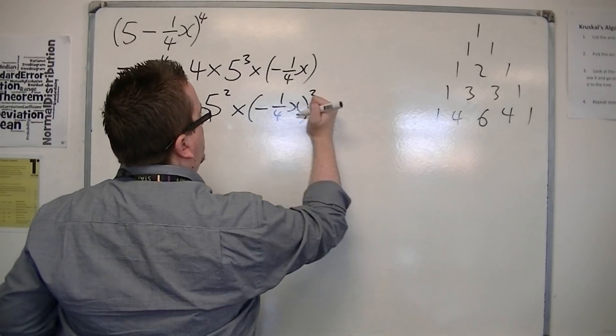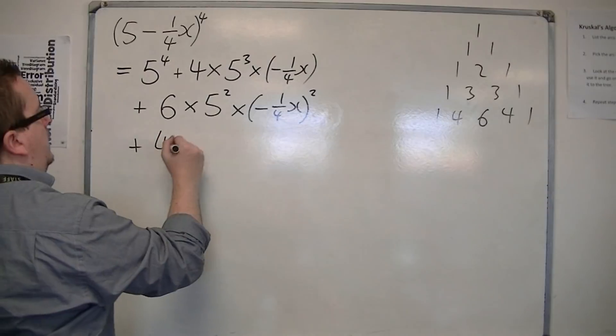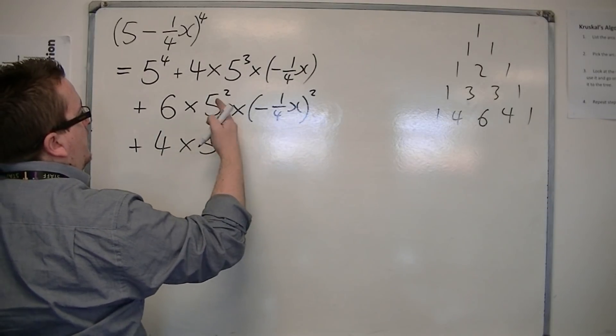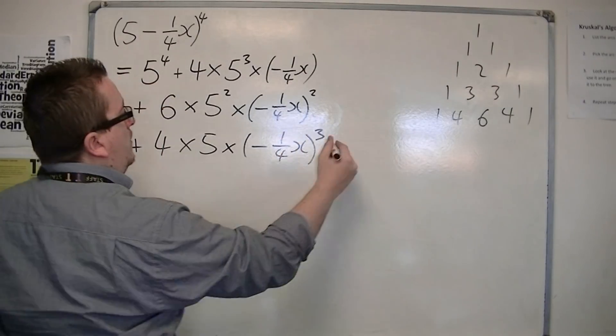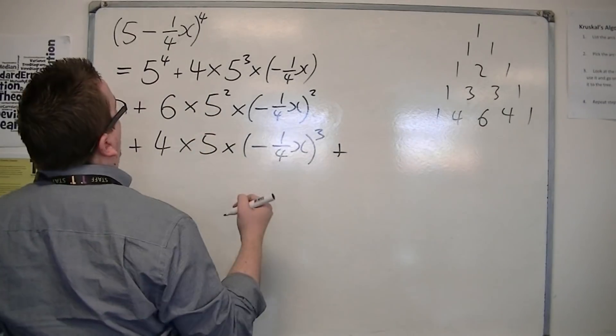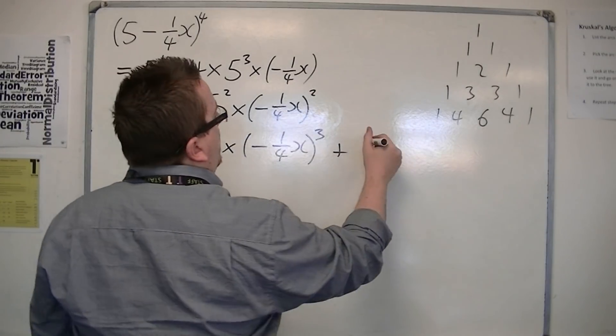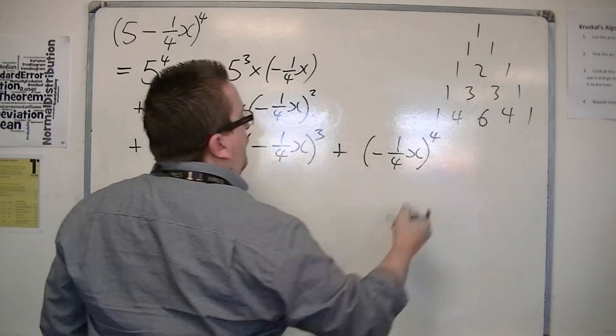Plus, I'll write it here, 4 times 5 to the power of 1 now, times minus a quarter x cubed, plus the final term is 1 lot of 5 to the 0 times minus a quarter x to the power of 4.